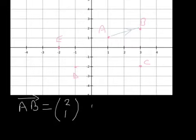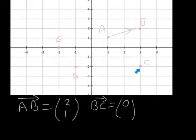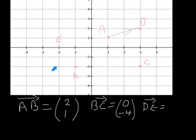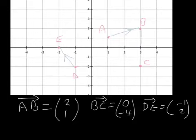The vector from B to C is 0 along, and because it's going down by 1, 2, 3, 4 — that's minus 4. So the vector BC is (0, -4). The vector from D to E: going left is negative so it's minus 1, but it's plus 2 up, so the vector DE is (-1, 2).